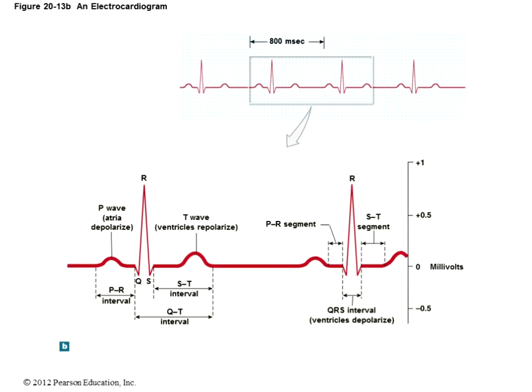Here is a cleaner diagram of the ECG. We have the P wave, the PR interval representing atrial contraction and relaxation, the QRS complex, the QT and ST intervals showing the end of ventricular contraction and onset of relaxation, and then the T wave for ventricular repolarization.